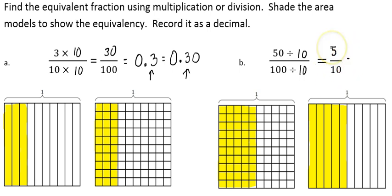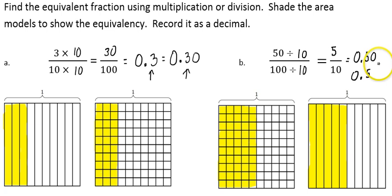To write those as decimals, I can start by writing 50 hundredths — this decimal matches the first picture. I can also write it as 5 tenths — this decimal matches the second picture. 50 hundredths and 5 tenths are equivalent decimals; they refer to the exact same amount on our area model.